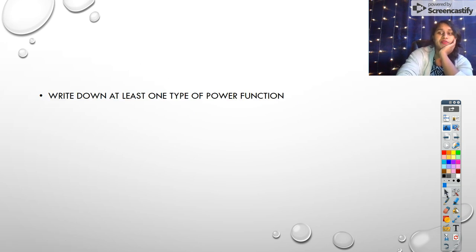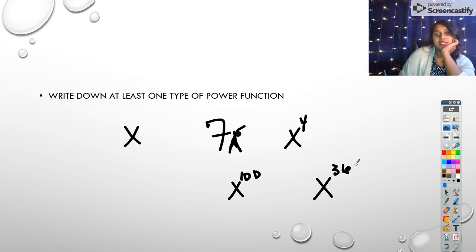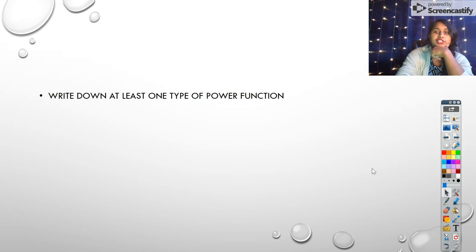Okay. Can you write down at least one type of power function? What are our power functions? Our power functions could be x. Our power functions could be seven because technically there's an x to the zero, which cancels out. Our power functions could be x to the fourth, x to the 100th, x to the 3,642. It doesn't matter. Any of those are considered a power function.